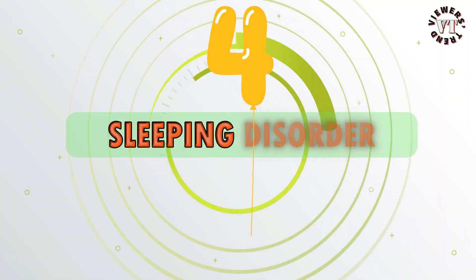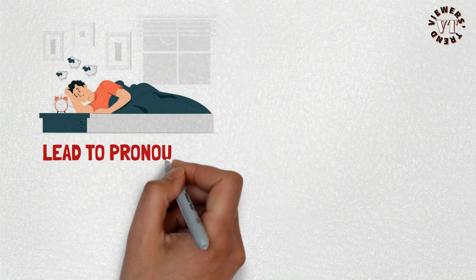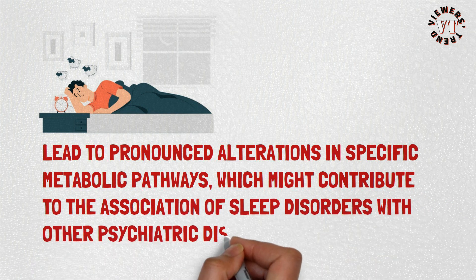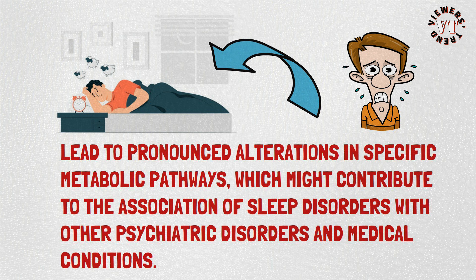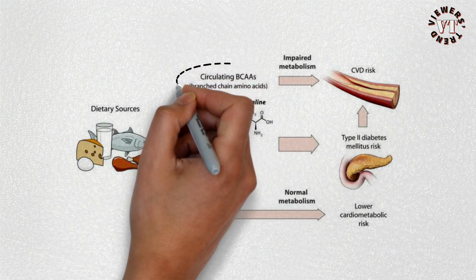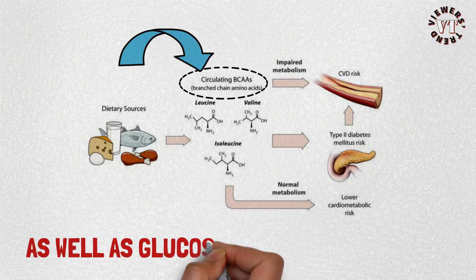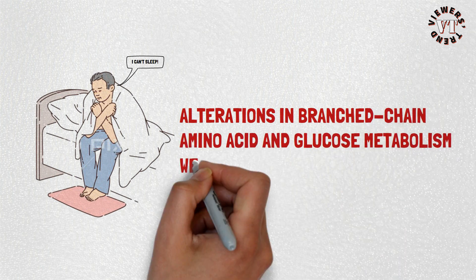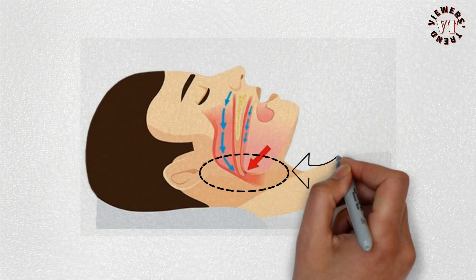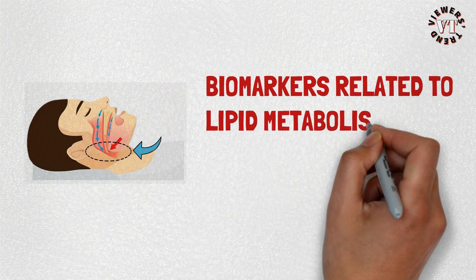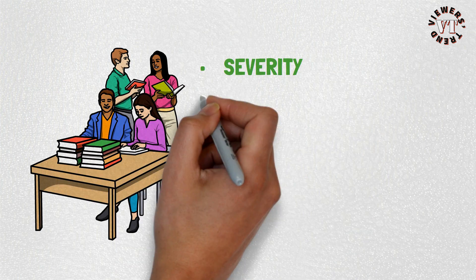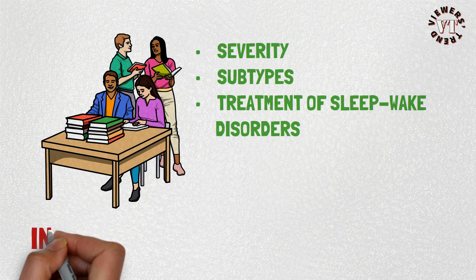4. Sleeping Disorder. Sleep-wake disorders lead to pronounced alterations in specific metabolic pathways, which might contribute to the association of sleep disorders with other psychiatric disorders and medical conditions. These alterations are mainly related to changes in the metabolism of branched-chain amino acids, as well as glucose and lipid metabolism. In insomnia, alterations in branched-chain amino acid and glucose metabolism were shown among studies. In obstructive sleep apnea, biomarkers related to lipid metabolism seem to be of special importance.